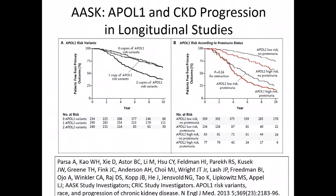APOL1 is a 43 kilodalton protein in the apolipoprotein family, bound to circulating HDL particles, expressed in various organs including kidney podocytes, renal tubular cells, and glomerular endothelial cells, and involved in the autophagy pathway. Other NIDDK-funded studies—the CRIC study and the ASK study—have shown the powerful effect of APOL1 mutant alleles on CKD progression in longitudinal studies. Two copies, not one, of the mutant allele confer risk, whether individuals have proteinuria or not, a potent risk factor for progression of kidney disease.